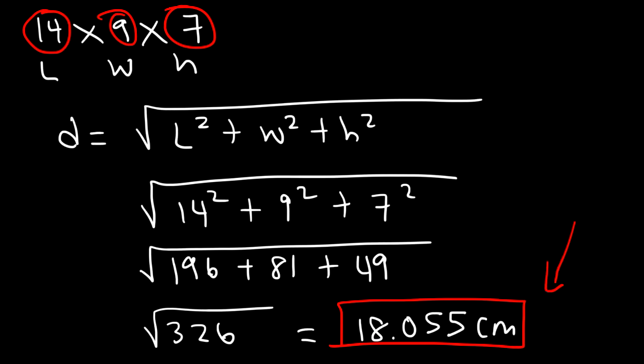So now you know how to find the volume, the surface area, and the length of the diagonal using these equations. That's all you need to know for rectangular prisms. Thanks for watching this video, and have a great day.